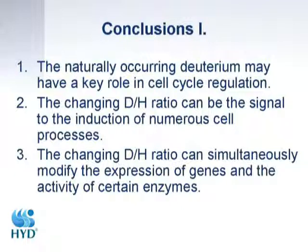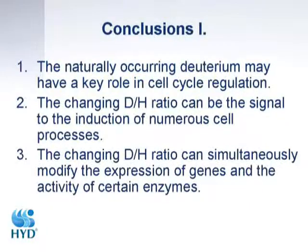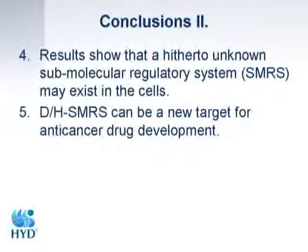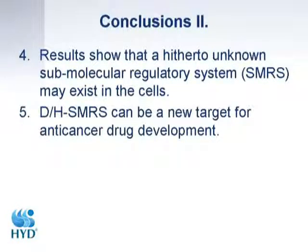In conclusion: naturally occurring deuterium may have a key role in cell cycle regulation. The changing D/H ratio can be the signal for the induction of numerous cell processes. The changing D/H ratio can simultaneously modify the expression of genes and the activity of certain enzymes. Our results show that a hitherto unknown sub-molecular regulatory system may exist in the cell, and this deuterium-hydrogen sub-molecular regulatory system can be a new target for anti-cancer development.